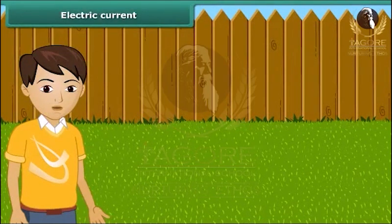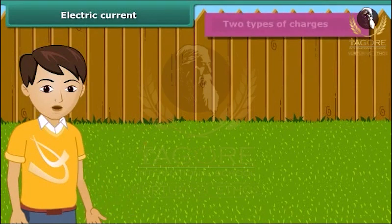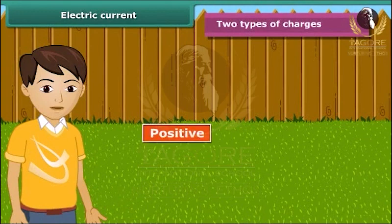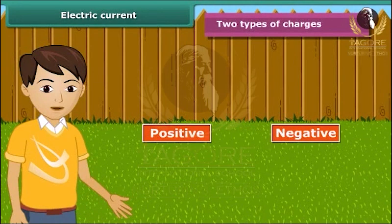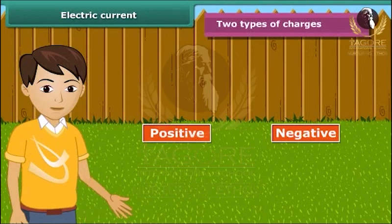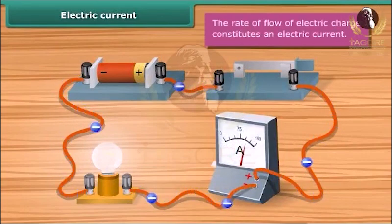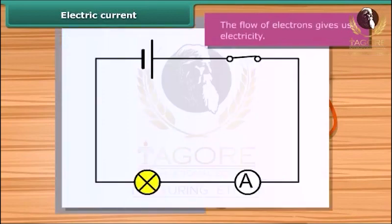We have just studied about electric charges and the forces they exert on one another. We have learned there are two types of charges: positive and negative. When charges transfer from one body to the other, the bodies are said to be charged. The moving or flowing charges produce an electric current.